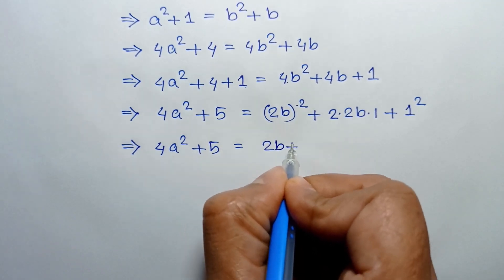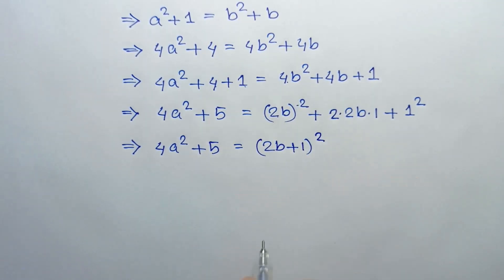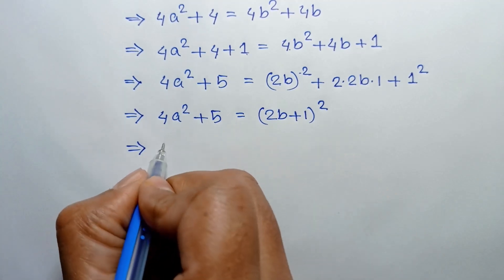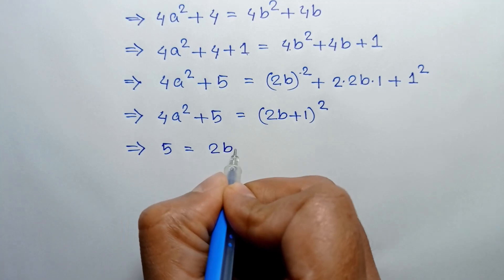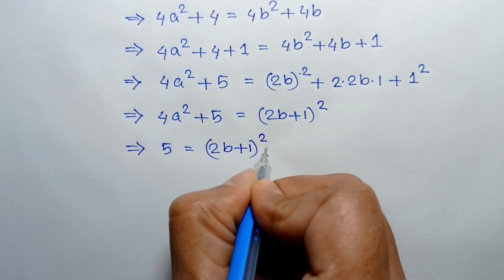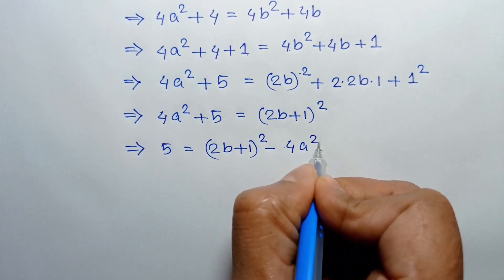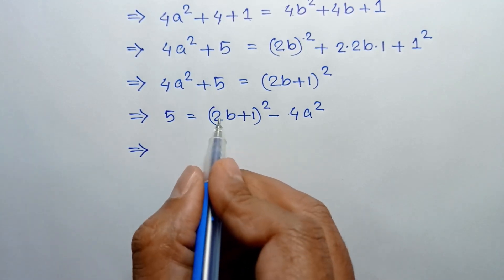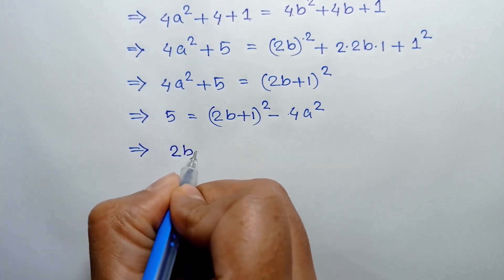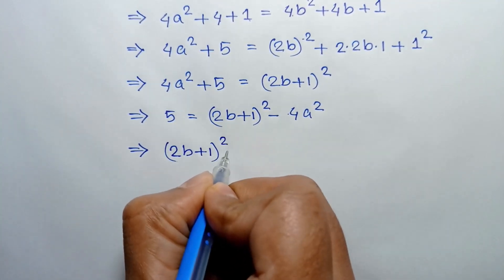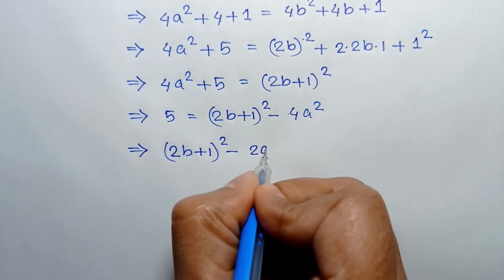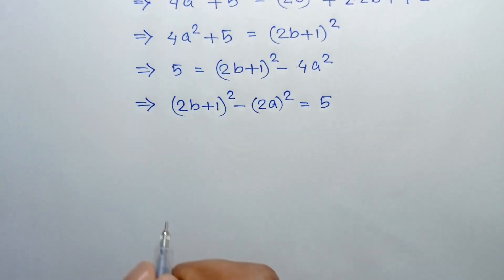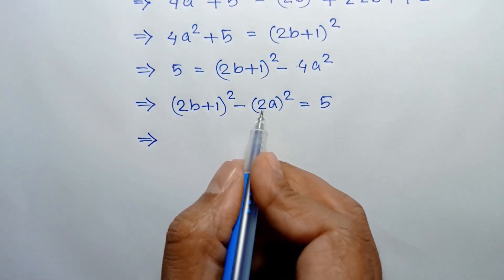So 4a² + 5 = (2b+1)². Taking 4a² to the right side we have 5 = (2b+1)² − 4a². Now exchanging sides, (2b+1)² − 4a² can be written as (2b+1)² − (2a)².